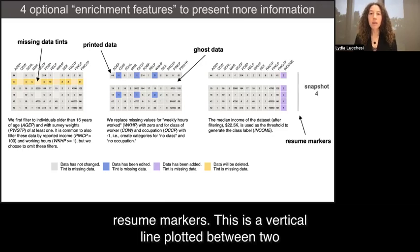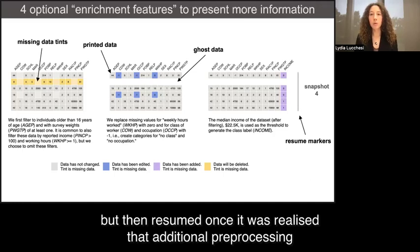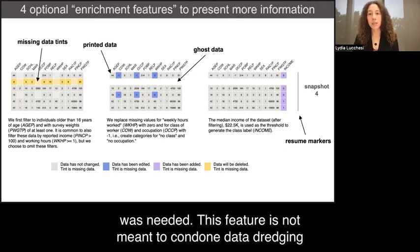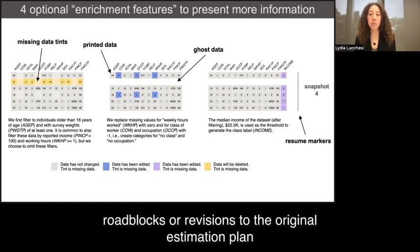This is a vertical line plotted between two snapshots to indicate where pre-processing stopped to start the analysis, but then resumed once it was realized that additional pre-processing was needed. This feature is not meant to condone data dredging, but instead provide a way for practitioners to be transparent about any unforeseen roadblocks or revisions to the original estimation plan.